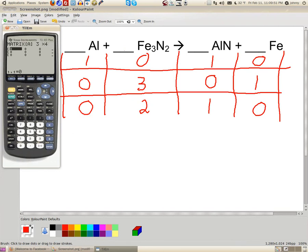There we go. Now I entered in the numbers. I've got one, enter, zero, enter, one, enter, zero, enter. I've got zero, enter, three, enter, zero, enter, one, enter. And the last row, zero, enter, two, enter, one, enter, zero, enter.